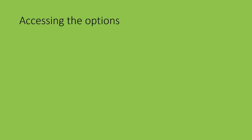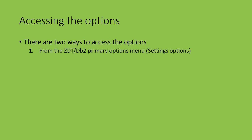Let's look at how we access the options. There are two ways to do this. Firstly, from the primary options menu. Secondly, using the options pull-down menu. Let's see how to use both methods now.